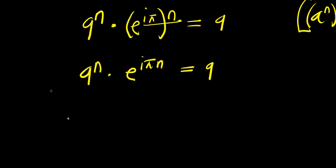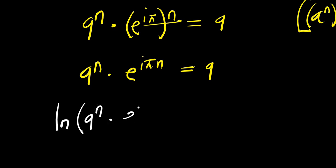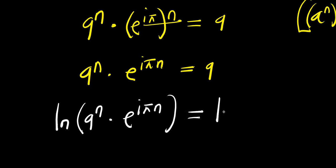From here, we apply natural log. We have natural log of 9 power n times e power i times pi times n equals natural log of 9.